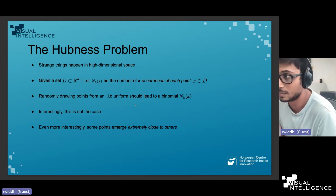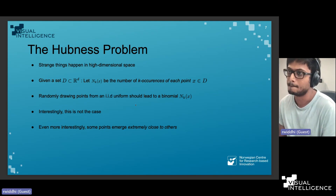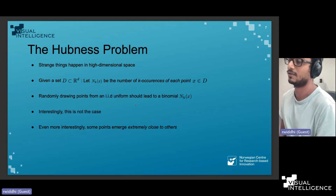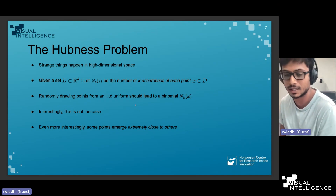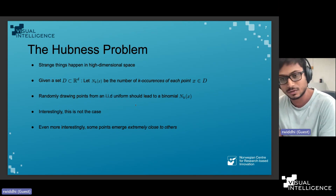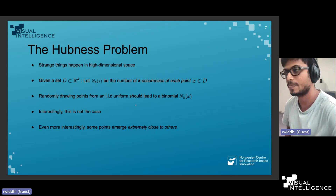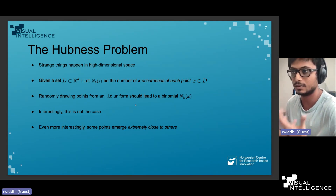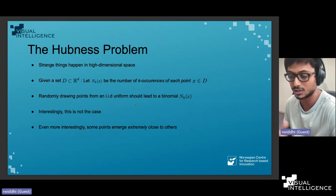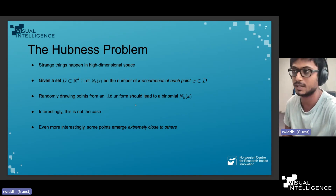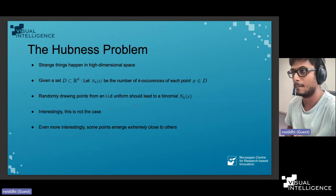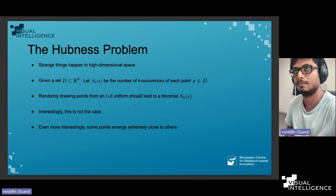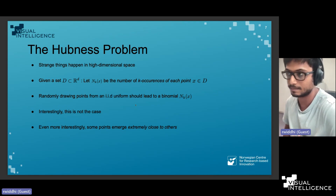Now let's talk about the hubness problem. This is not a new problem — it goes back to at least the 1970s or 1980s in computer science, related to the curse of dimensionality. The consequence of that curse is that strange things happen in high-dimensional space — points and data start to behave in unintuitive ways.